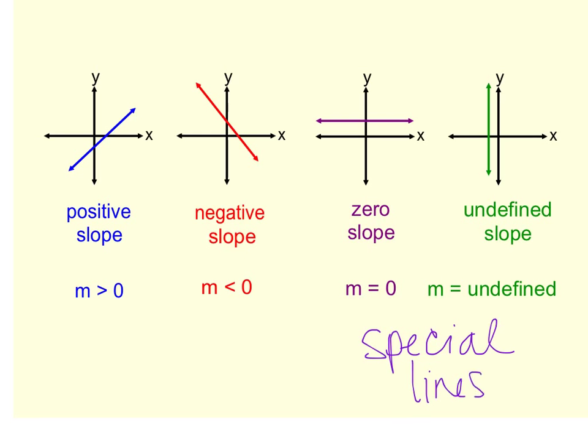It's an easy way to remember. So these are your special lines, your horizontal and your vertical lines. So a horizontal line, every single one that's horizontal, will have a zero slope. It's not positive, it's not negative, it's neutral right in the middle, so zero slope. And then your vertical lines will have an undefined slope.